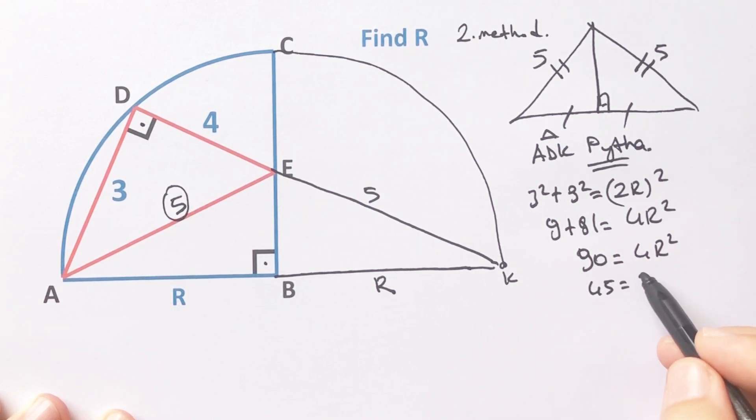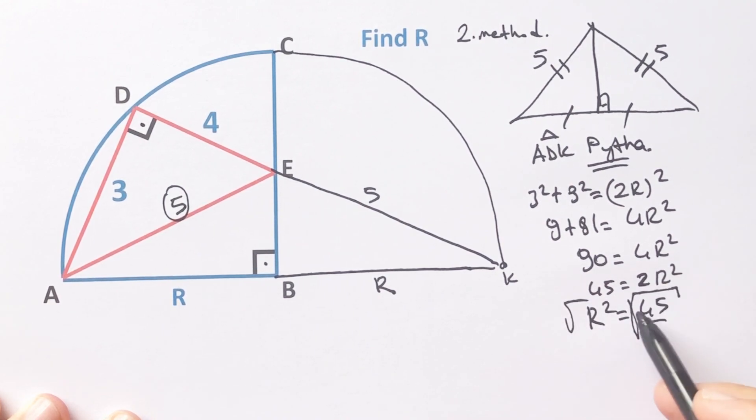45 equals 2R squared. So R squared equals 45 over 2. Therefore, let's square root both sides. R equals 3 root 5 over root 2. And then let's multiply with root 2 numerator and denominator. Radius equals 3 root 10 over 2.